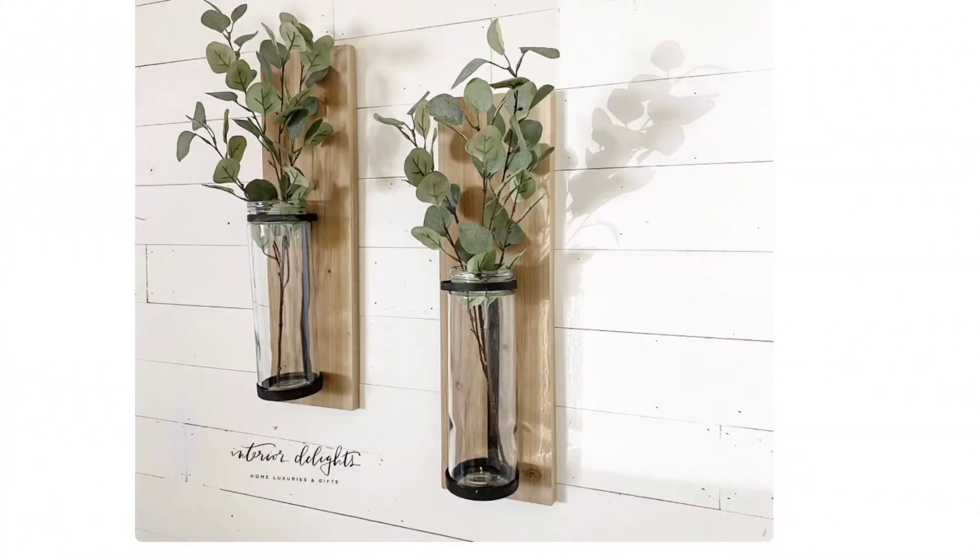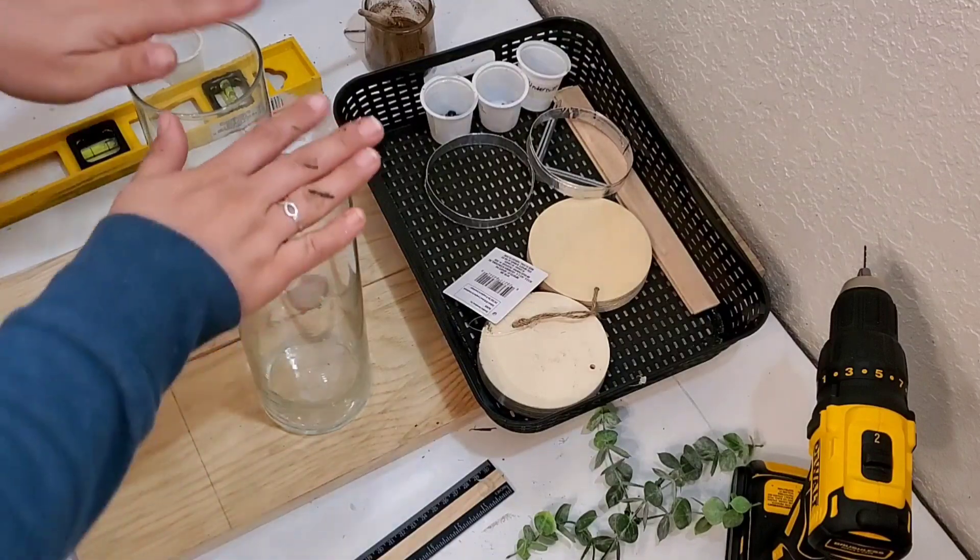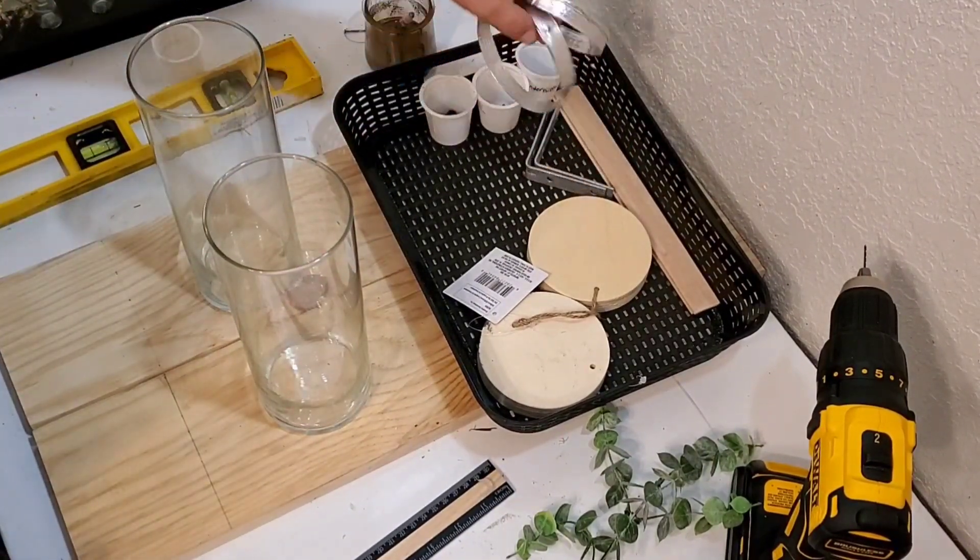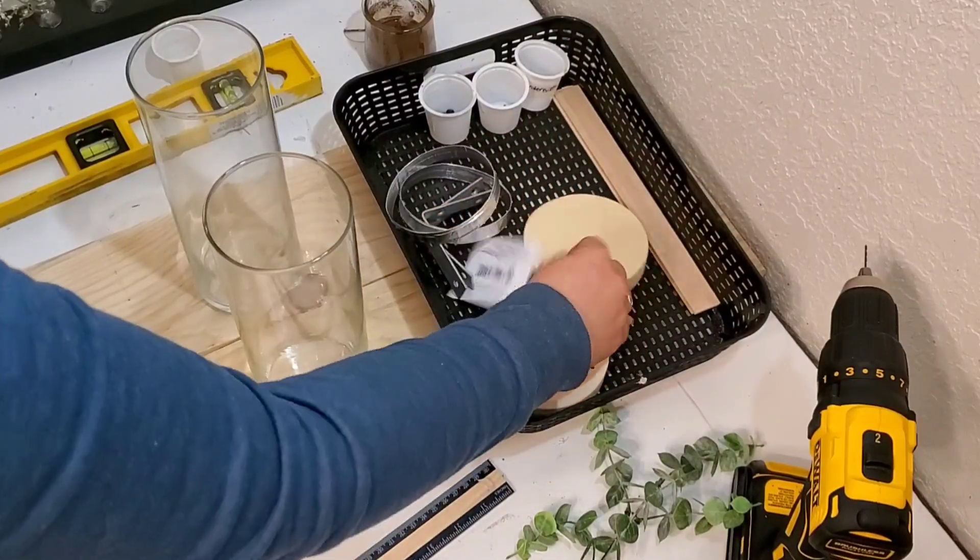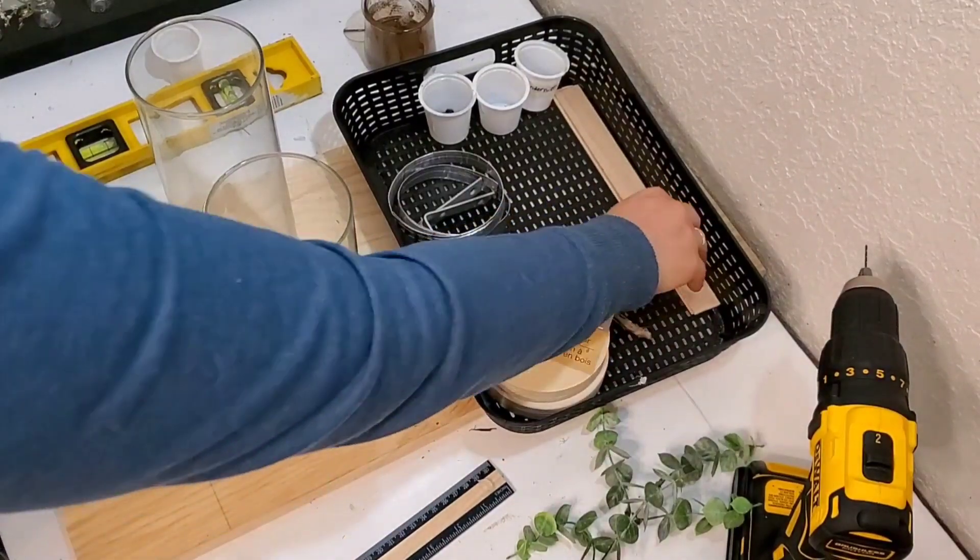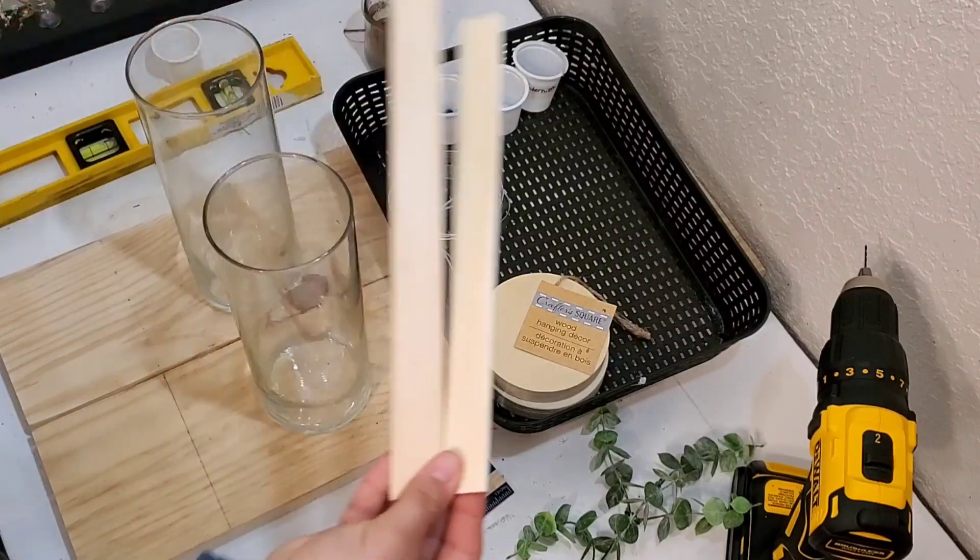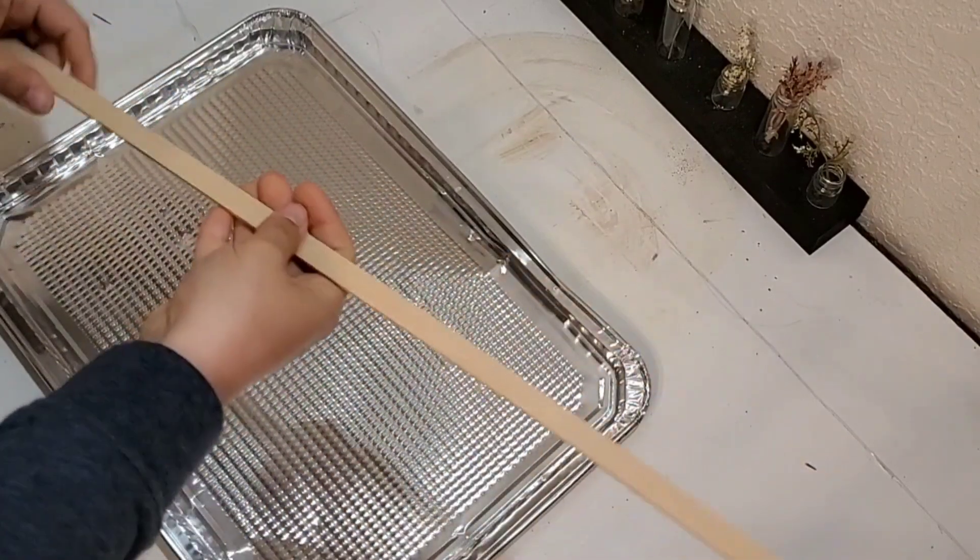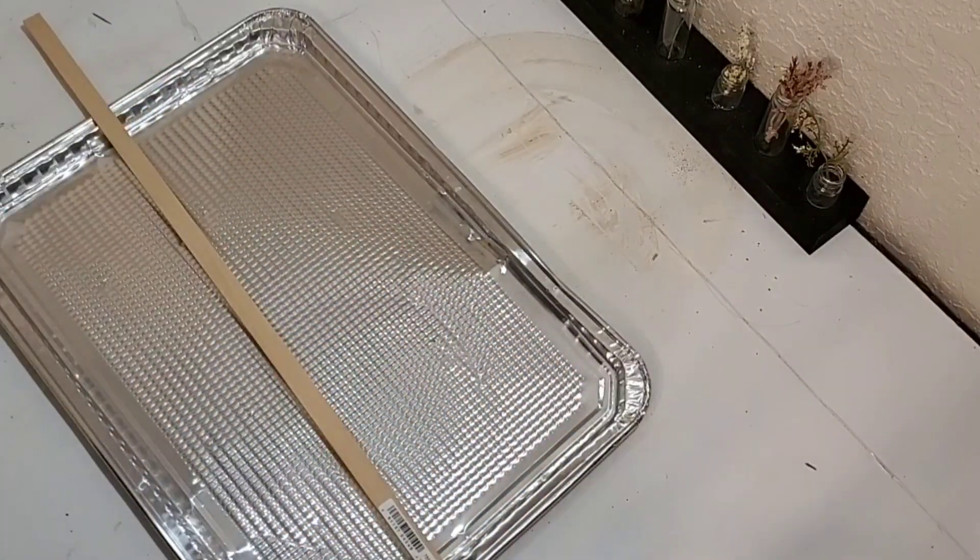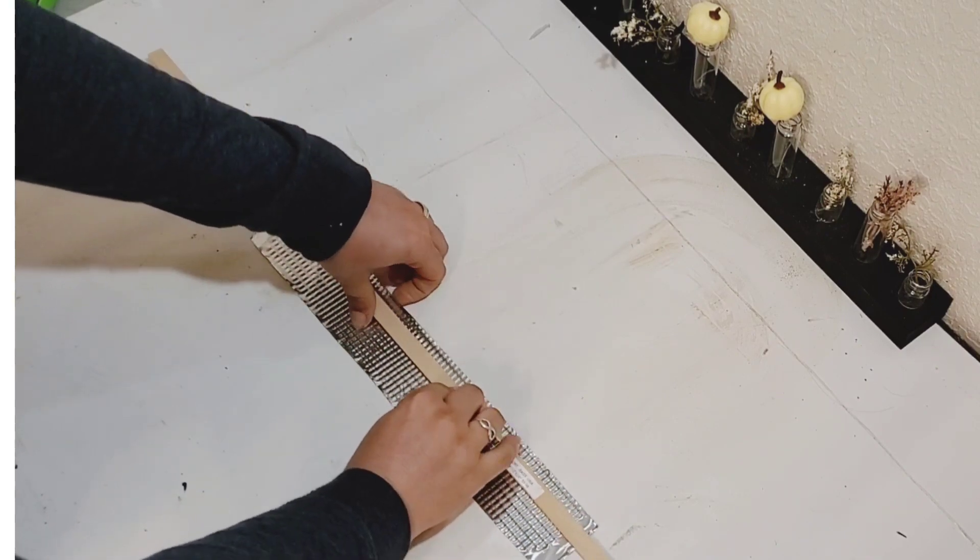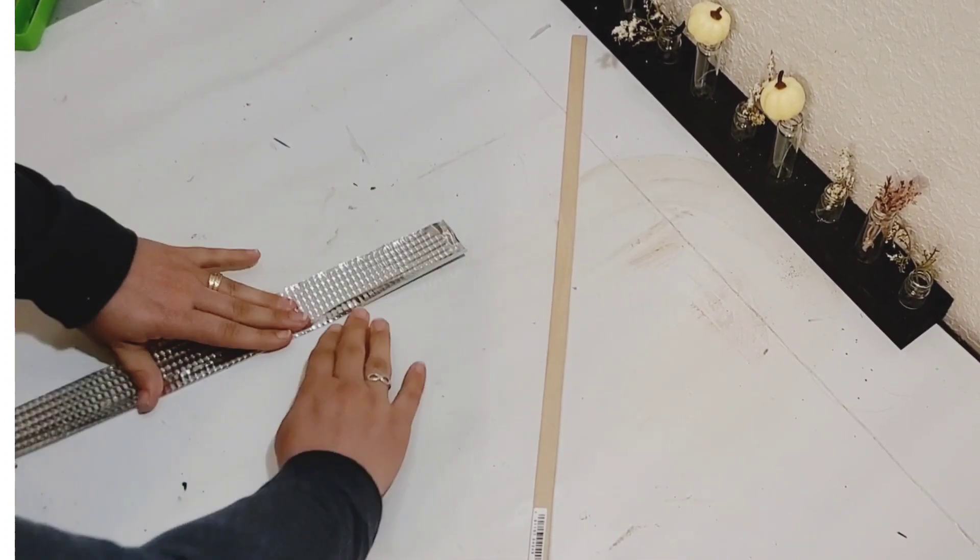Inspiration for DIY number two are these wall sconces from Interior Delights. I'm taking two Dollar Tree vases. I'm taking two planks that I cut down. Two rings that I made. I will show you that as well. L brackets that are three inches long. Two of these rounds from Dollar Tree. And two of these craft sticks I cut down to the length of the vases. To make the metal rings I used a cookie sheet from Dollar Tree. You get two for a dollar. And this craft stick that was 1 1⁄8 inch by 1 1⁄2 inch. So it's 1 1⁄2 inch wide is what I was really using it for.